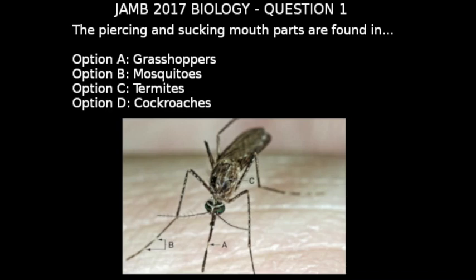Finally, option B — mosquitoes. Mosquitoes feed on the blood of their hosts, and their primary hosts are humans. Blood is not found on the surface of our skin; it's found deep below in our blood vessels. So for a mosquito to access this blood, it needs mouthparts that can both pierce through the skin and suck the blood up.